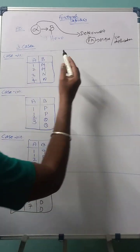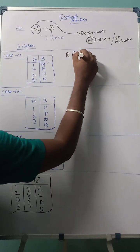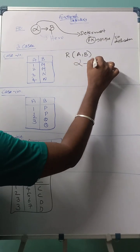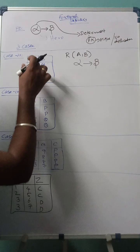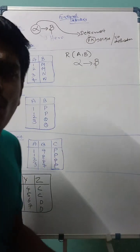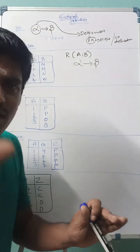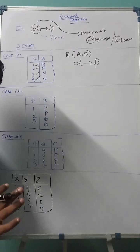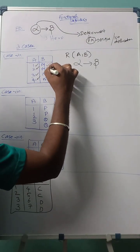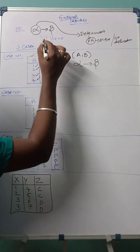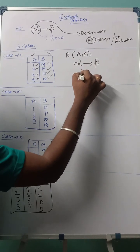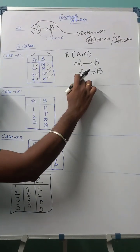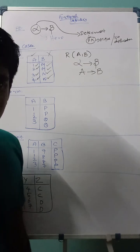For Case 1, there is a relation R that contains two attributes. You have to determine who is alpha and who is beta. Scan the values of A: 1, 2, 3, 4 — all unique. Scan B: it contains M repeated and N repeated, so duplicates exist. A contains all unique values, so A will be the hero. Therefore, A determines B.